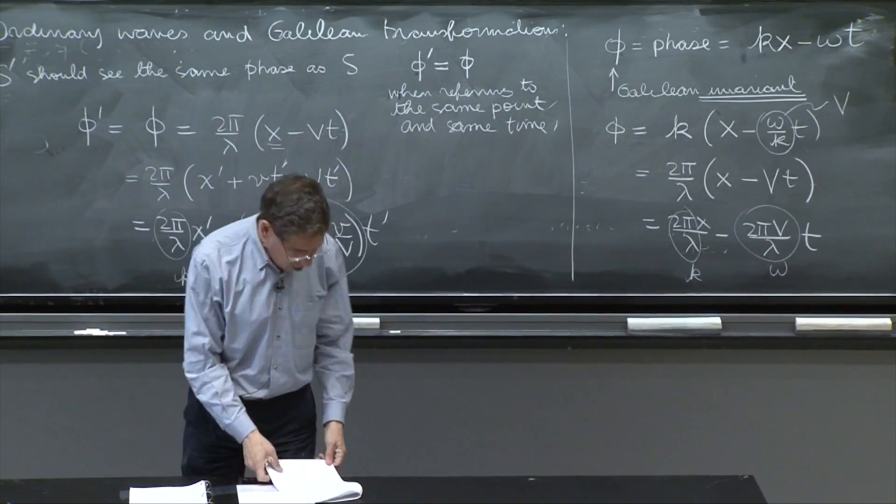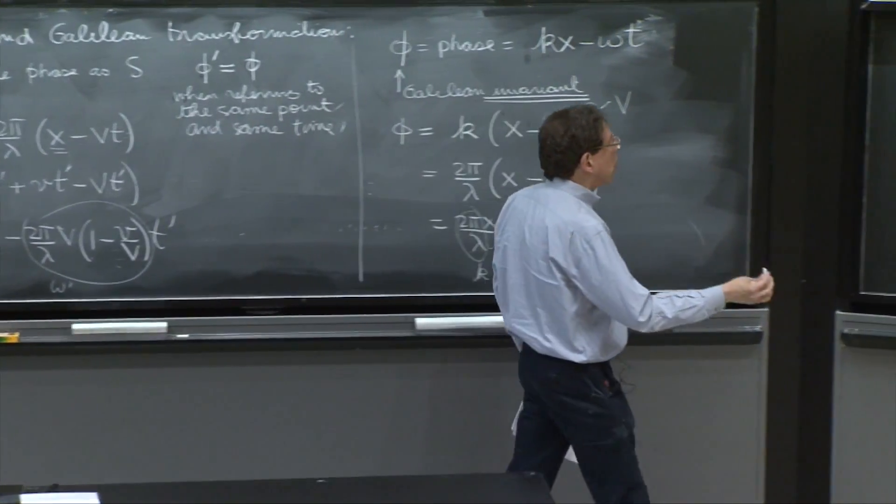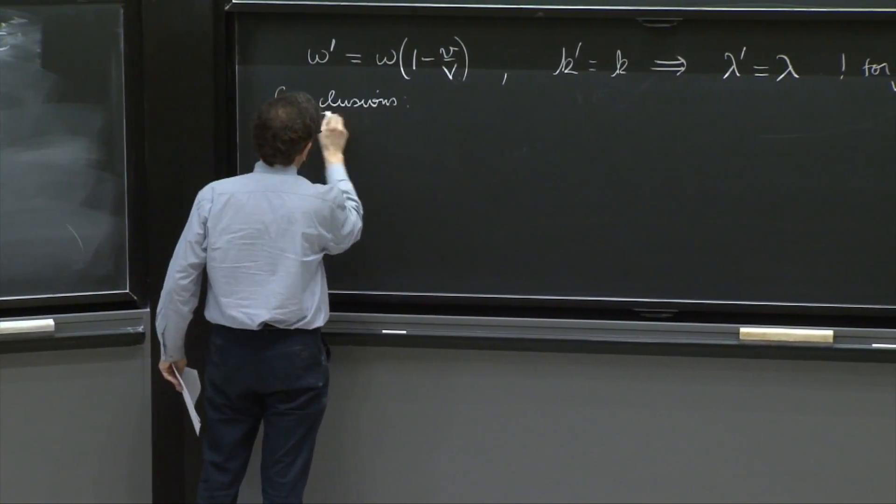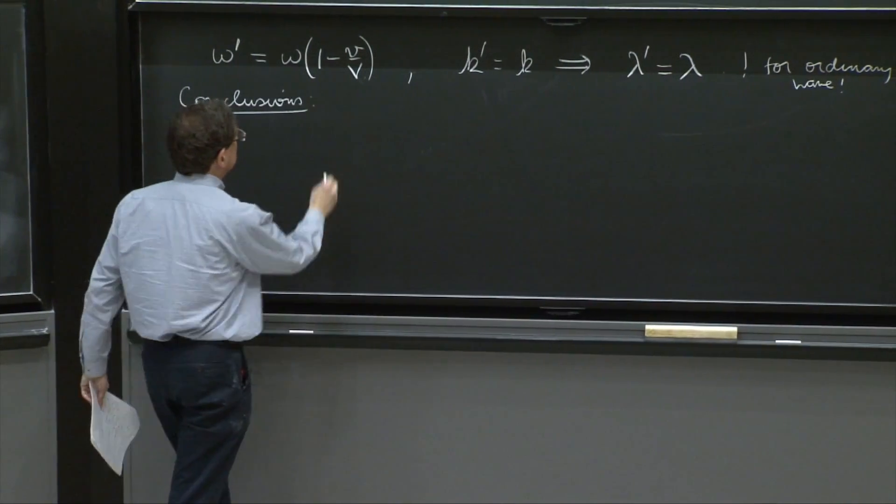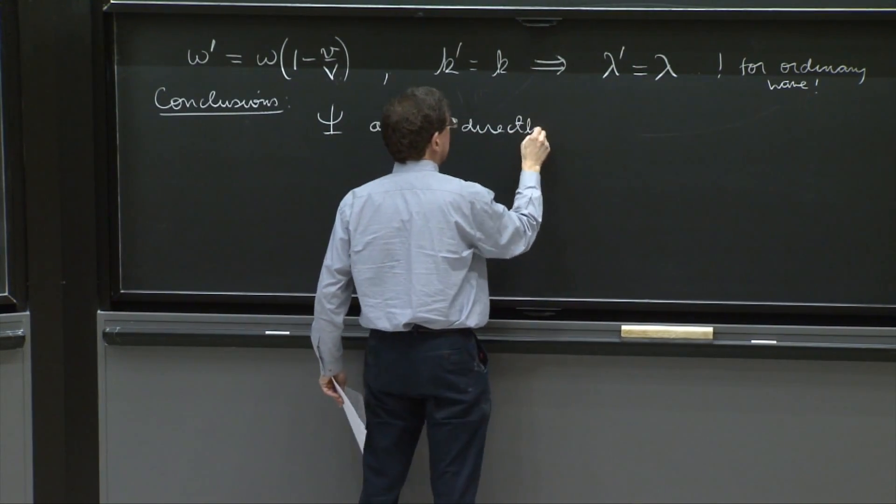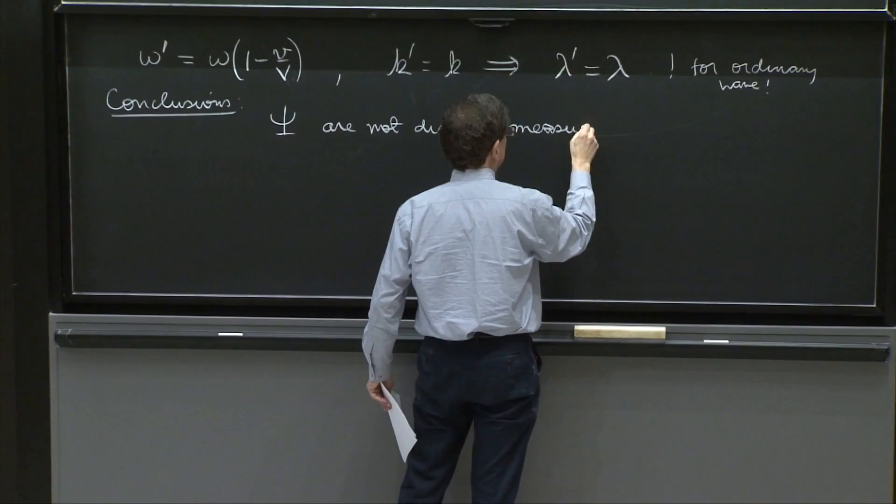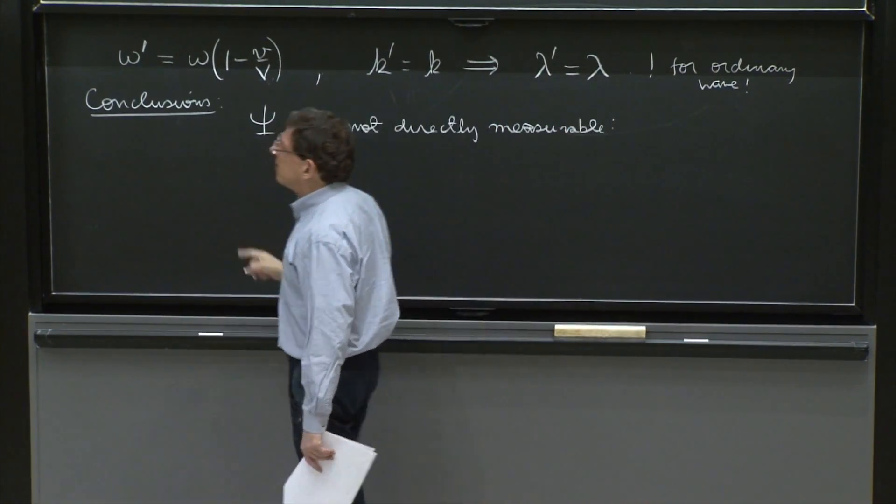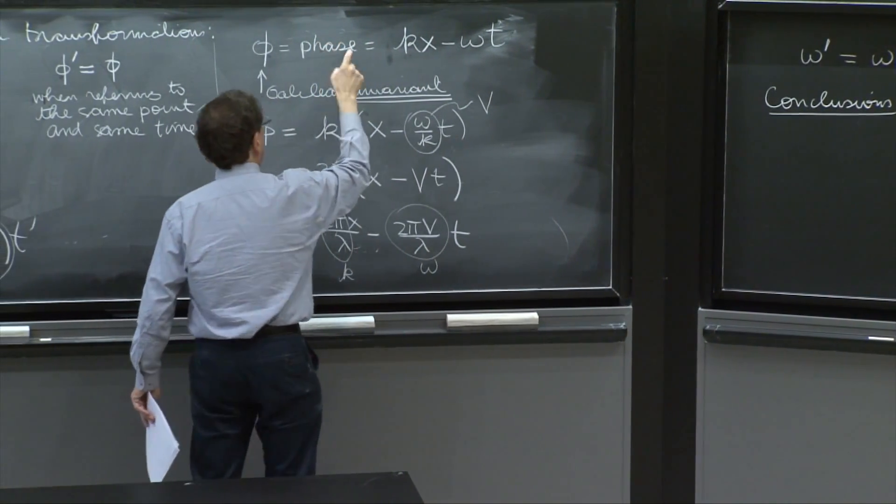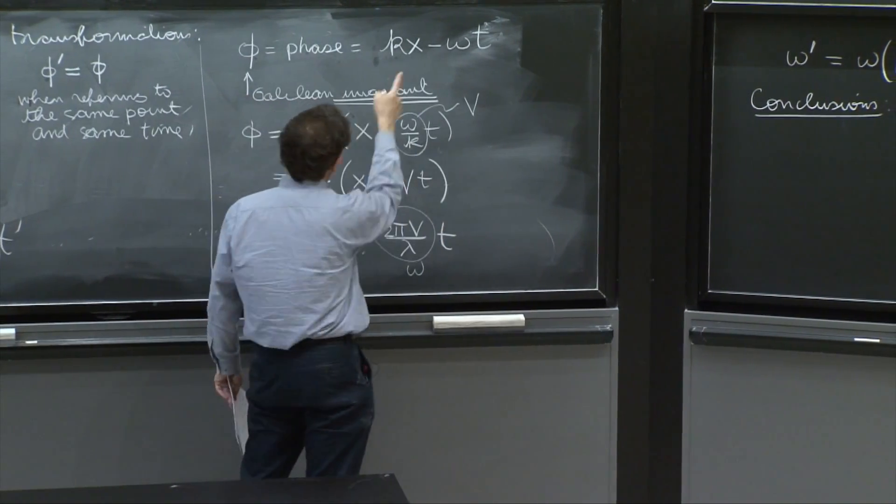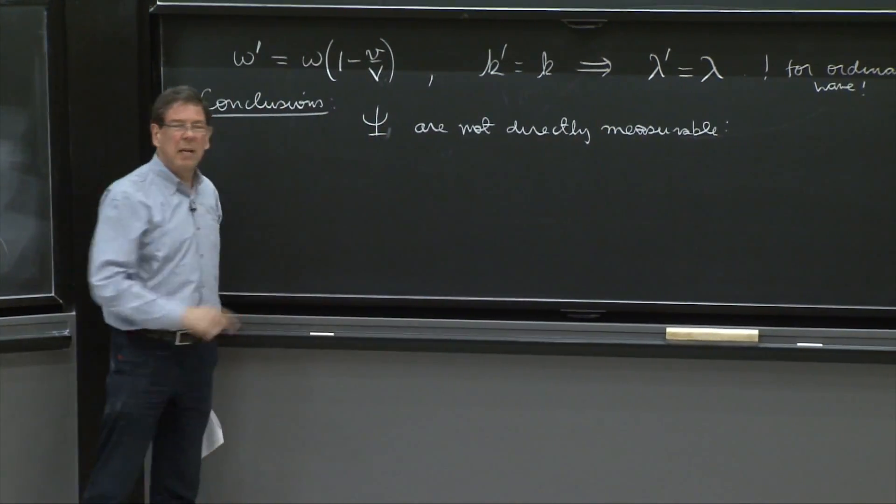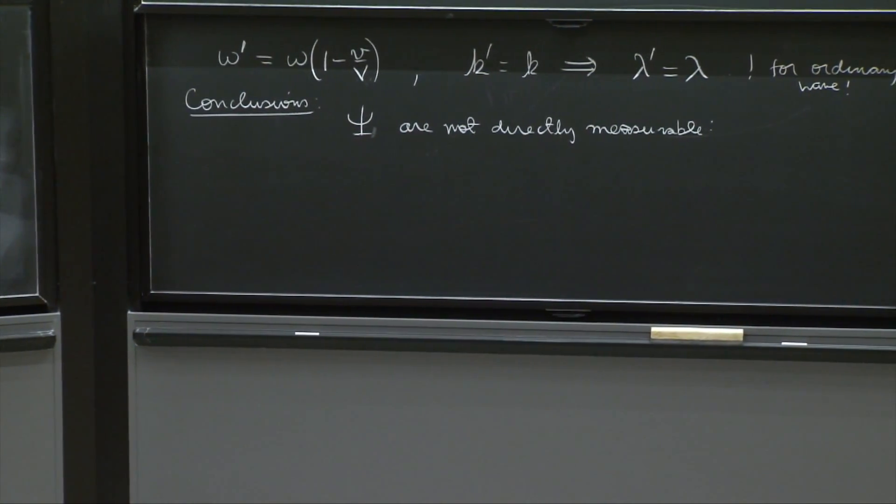So the conclusions are that these waves are surprising. So psi's are not directly measurable. Because if you had a quantity for which you can measure, like a sound wave or a water wave, and you could measure aspects to it, they should agree between different observers. So this is going to be something that is not directly measurable.